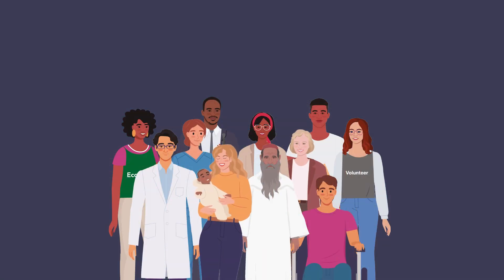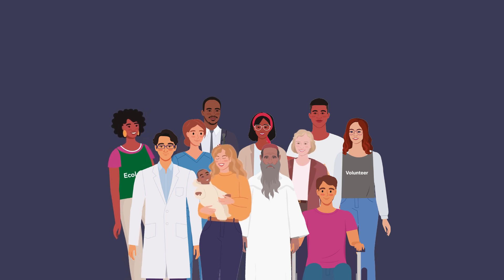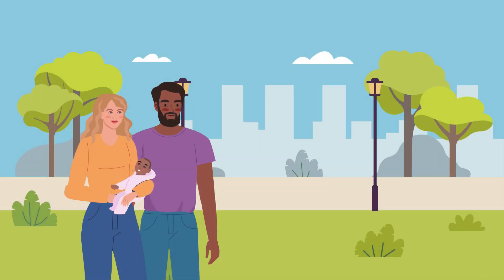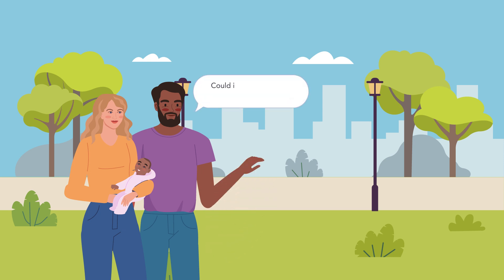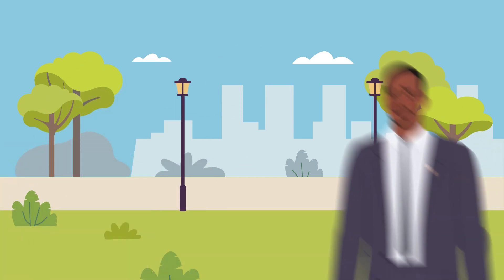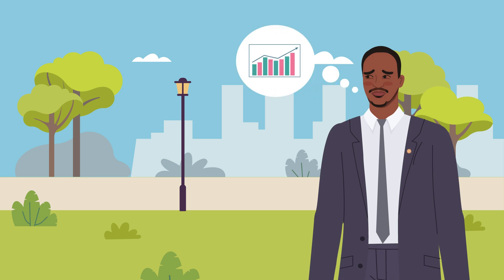Finally, stakeholders are consulted about the full range of ways in which they may value these processes and impacts. For example, local people might value a change of management in a green space for psychological and aesthetic reasons, but worry that it will be detrimental for social and moral reasons. Ecologists might value the change for its biodiversity impacts, while budget holders may value economic efficiencies.